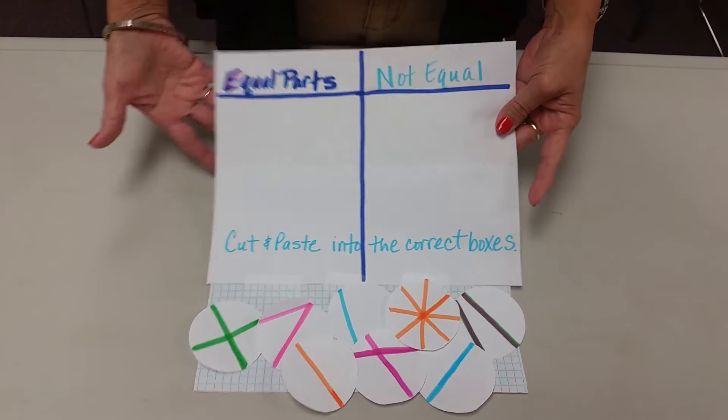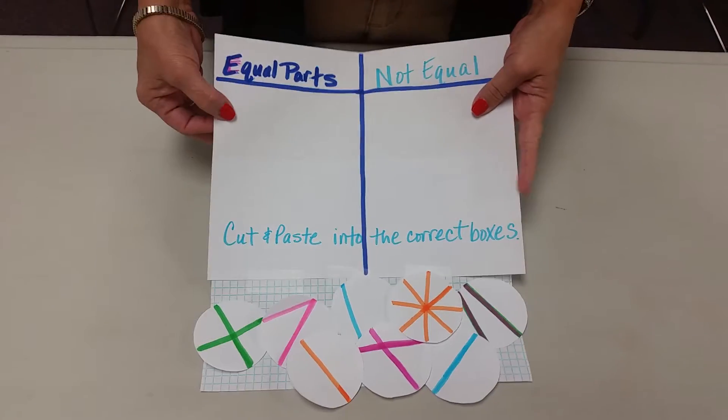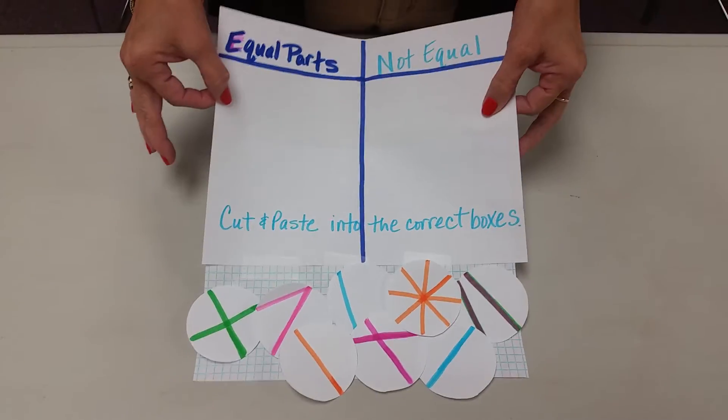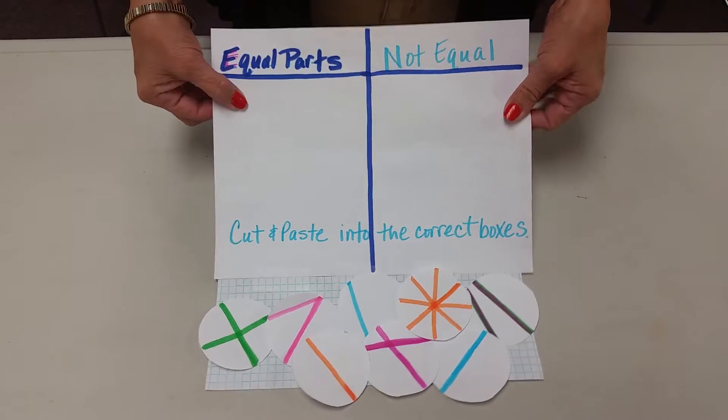We're working on equal parts of a whole using a foldable activity. Part of it involves folding a solid piece of paper.